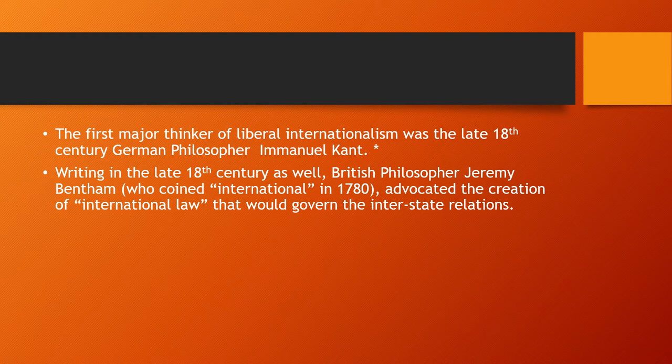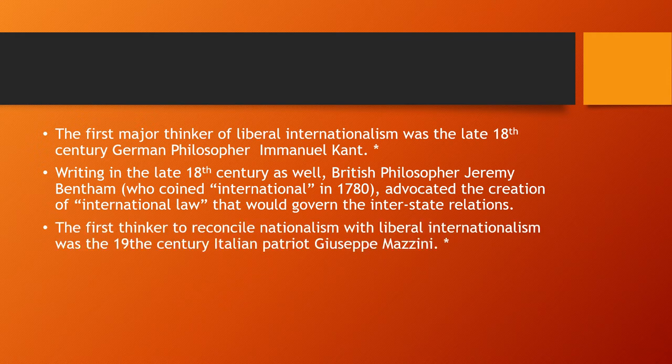Writing in the late 18th century as well, British philosopher Jeremy Bentham, who coined the word 'international' in 1780, advocated the creation of international law that would govern interstate relations. The first thinker to reconcile nationalism with liberal internationalism was the 19th century Italian patriot Giuseppe Mazzini. According to Mazzini, he was both an advocate of the unification of the various Italian-speaking mini-states and a major critic of the Metternich system. He believed in a republican government — no king, no queen, and no hereditary succession. He proposed a system of free nations that cooperated with each other to create an international system. Mazzini was a nationalist-internationalist who believed that free, unified nation-states should be the basis of global cooperation.